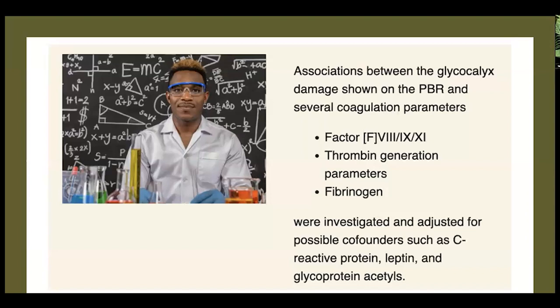There are thrombin generation parameters — good tests for that which are very inexpensive, actually much less than 25,000. And then fibrinogen, which is the precursor for the fibrin deposits. These are very inexpensive tests, the thrombin and the fibrinogen.